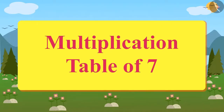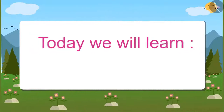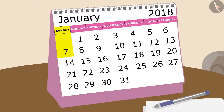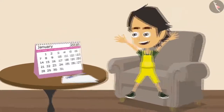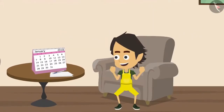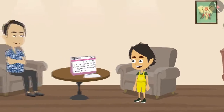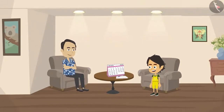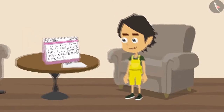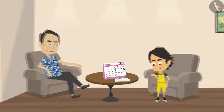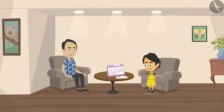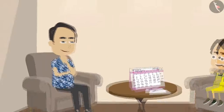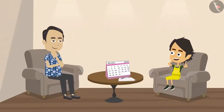Multiplication Table of 7. Today we will learn the multiplication table of 7. Today is Sunday and Ayushman is very happy because every Sunday he goes for an outing with his parents. Papa and Ayushman are ready to go out and are waiting for mummy. By the time mummy gets ready, Papa thinks of teaching something new to Ayushman.